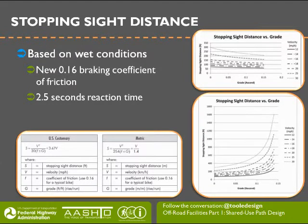Stopping sight distance uses the same formula as the previous guide. The key update is a new braking coefficient of friction of 0.16 under wet conditions, based on more recent research; the previous guide used 0.25. This is more conservative, but with lower design speeds, actual braking distances are very similar to the previous guide. Perception-reaction time remains 2.5 seconds. The formula graphs show stopping sight distance for various design speeds and grades—ascending grades shown in the top graph, descending grades in the bottom.